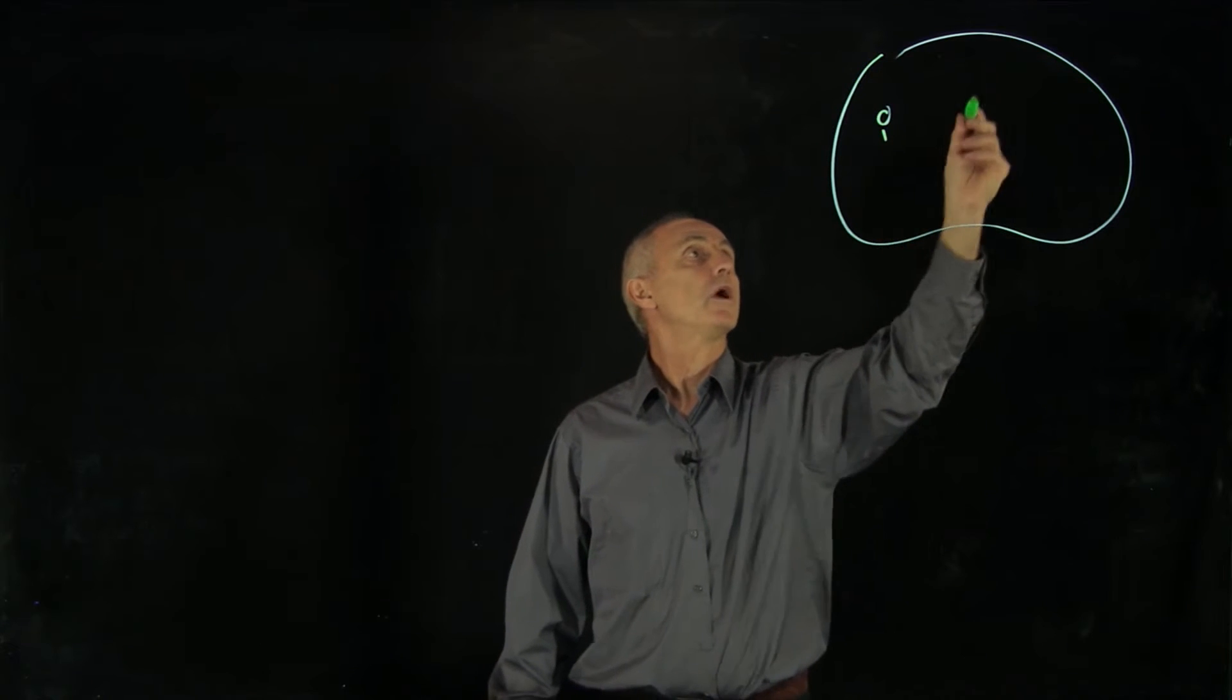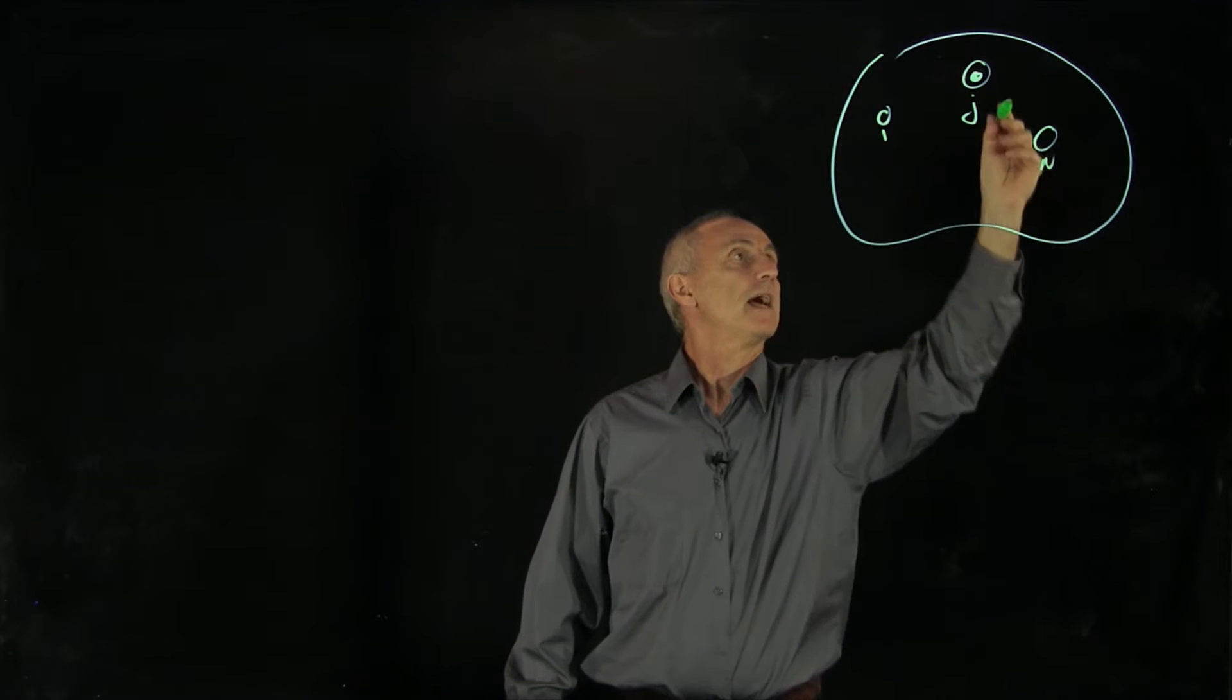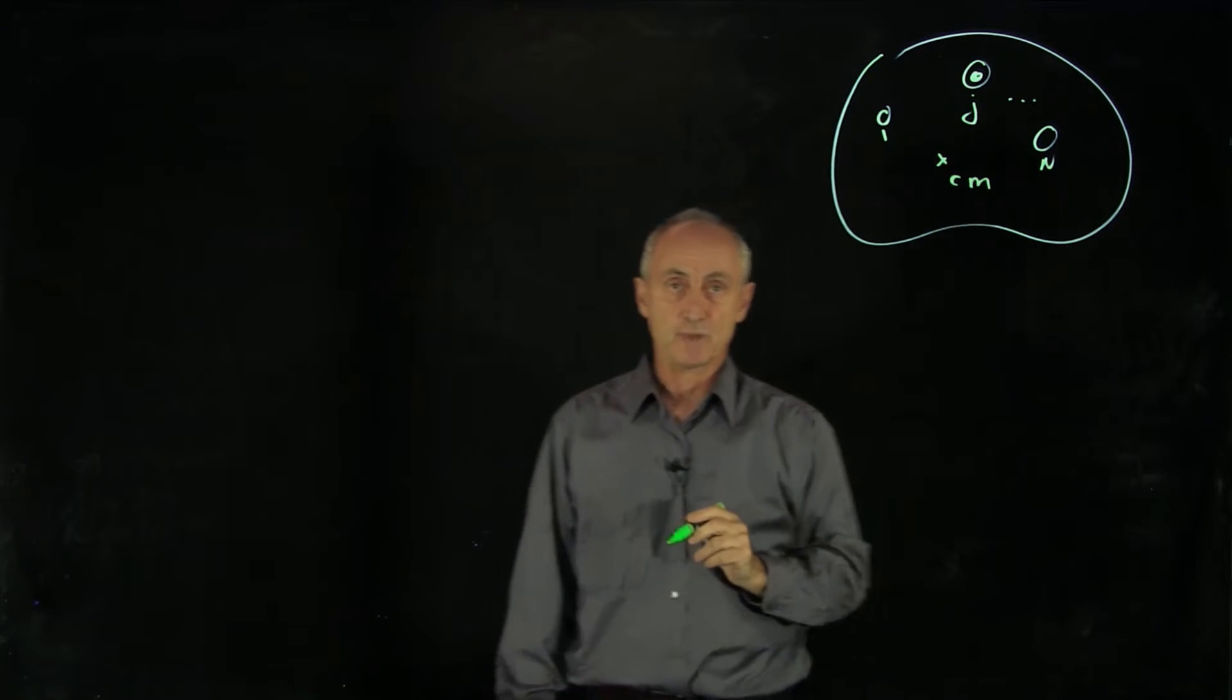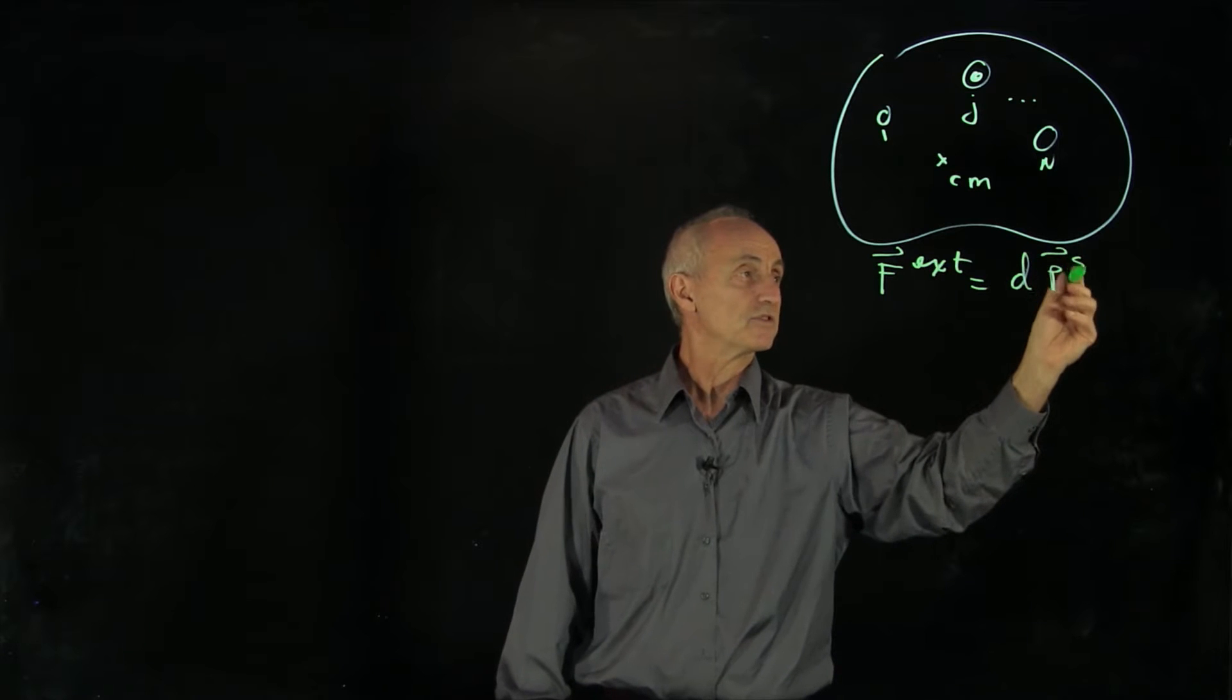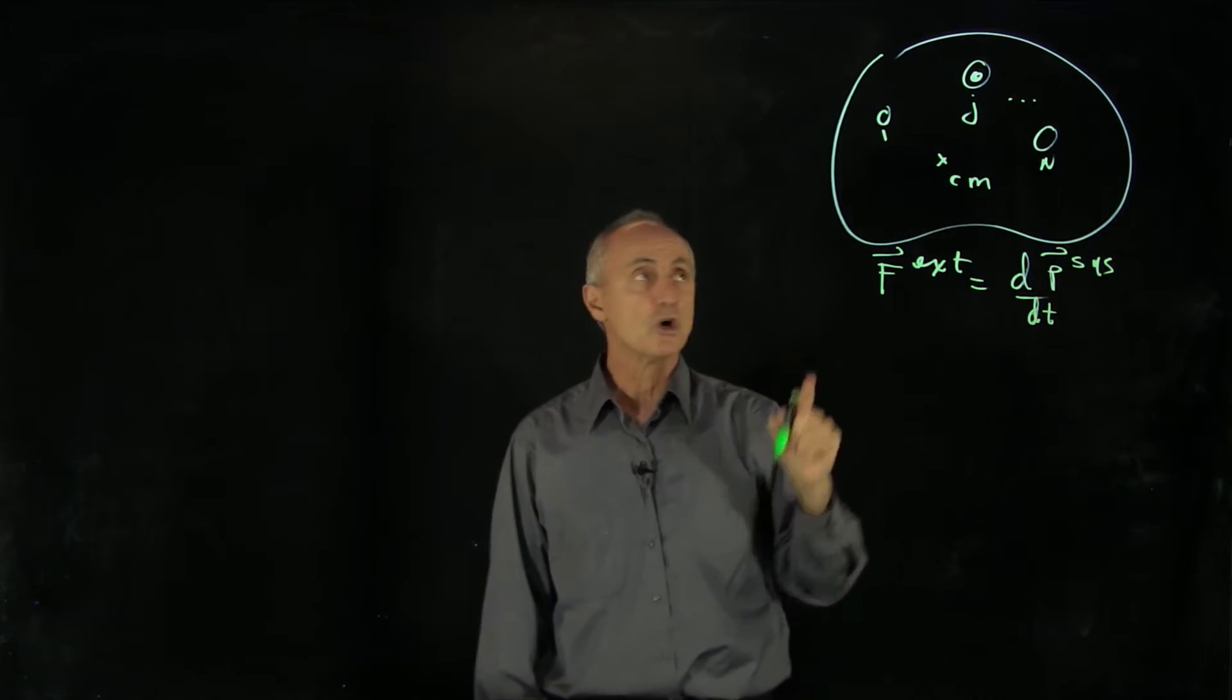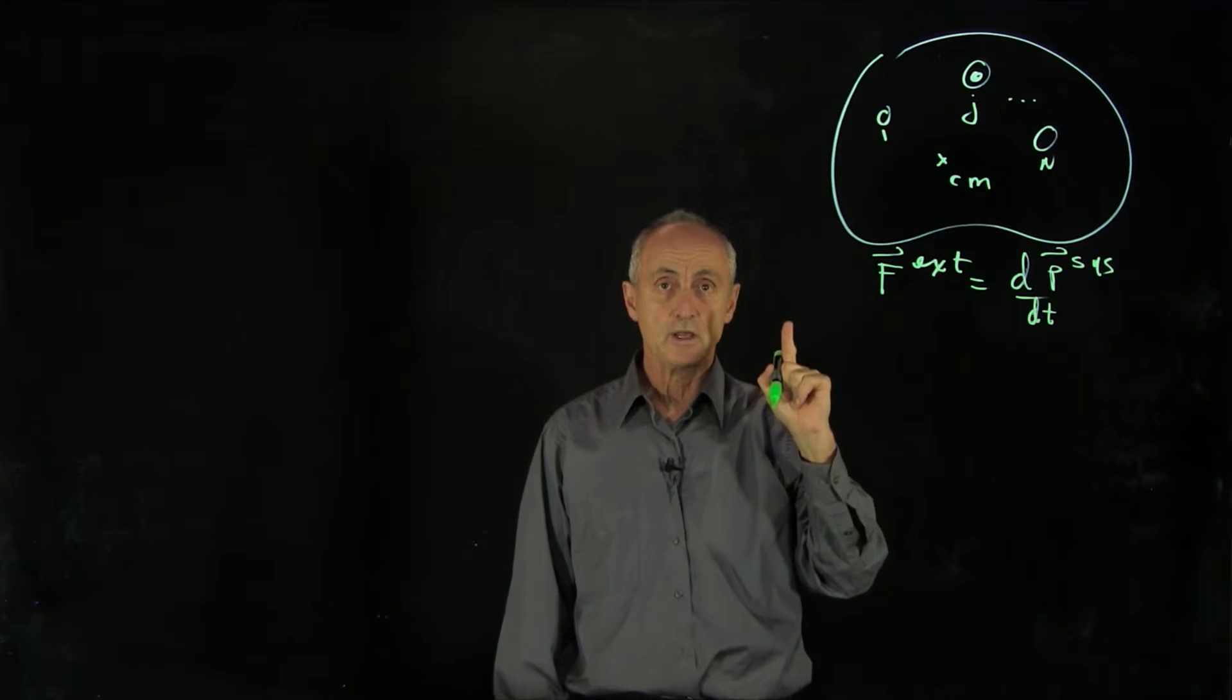We'd like to consider a system of particles. Say we have object 1, we'll call this the j-th object, object n. And somewhere in the system of particles is the center of mass. Now we know that the external force is causing the momentum of the system to change. And what we'd now like to show is that we can reduce this system to an effective single particle.